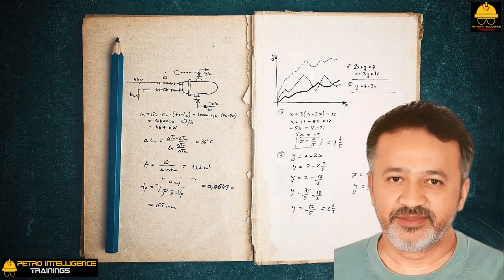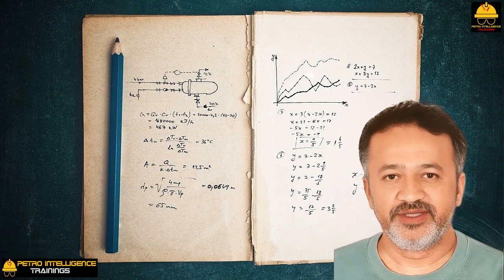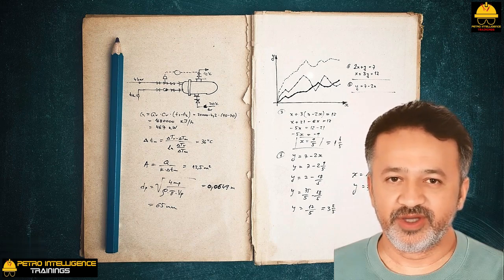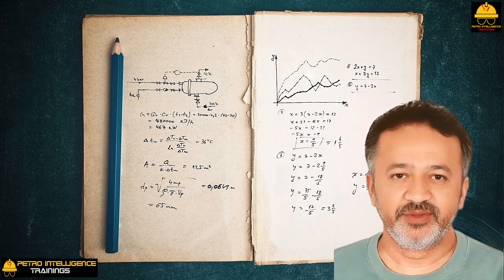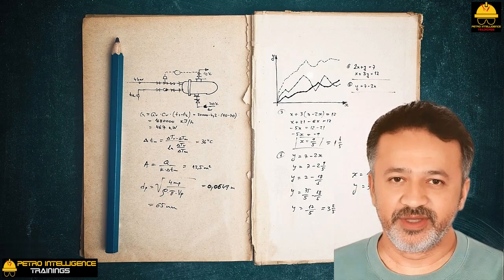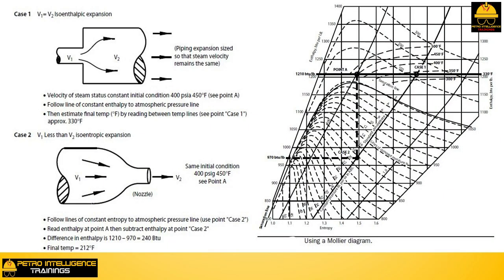Iso-entropic expansion: I like to call the iso-enthalpic expansion a parasitic expansion because it wastes the potential ability of the steam to do work. On the other hand, we have the good iso-entropic expansion that maximizes the ability of the expanded steam to do work. This picture of case 2 also illustrates this sort of good expansion.